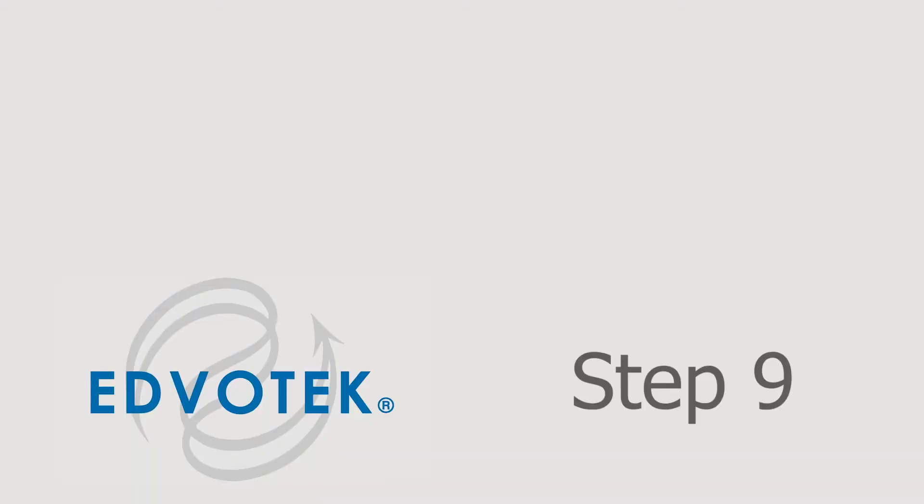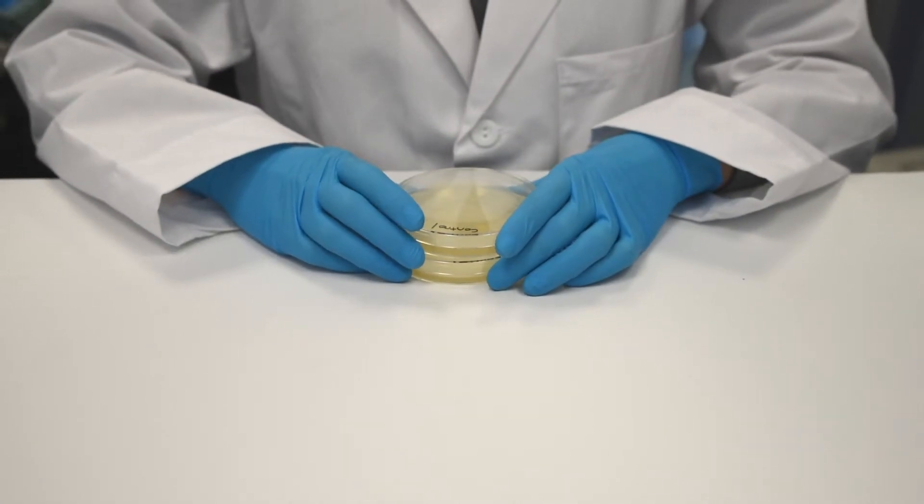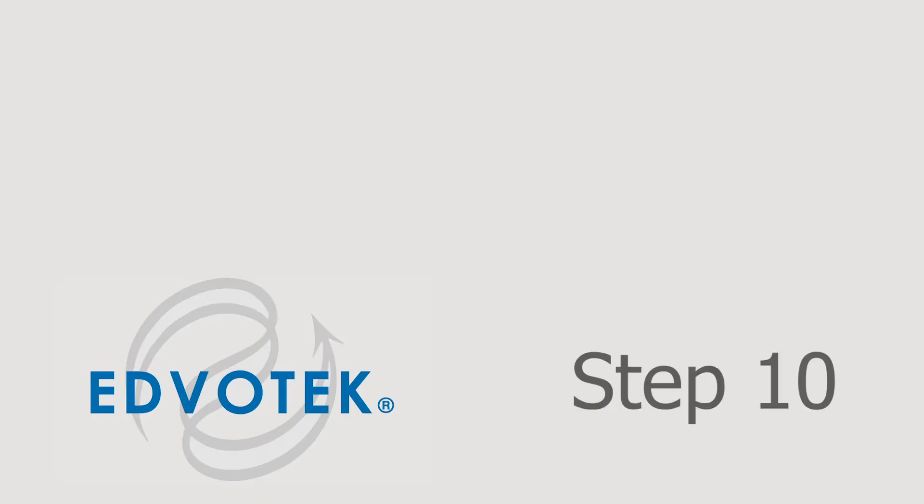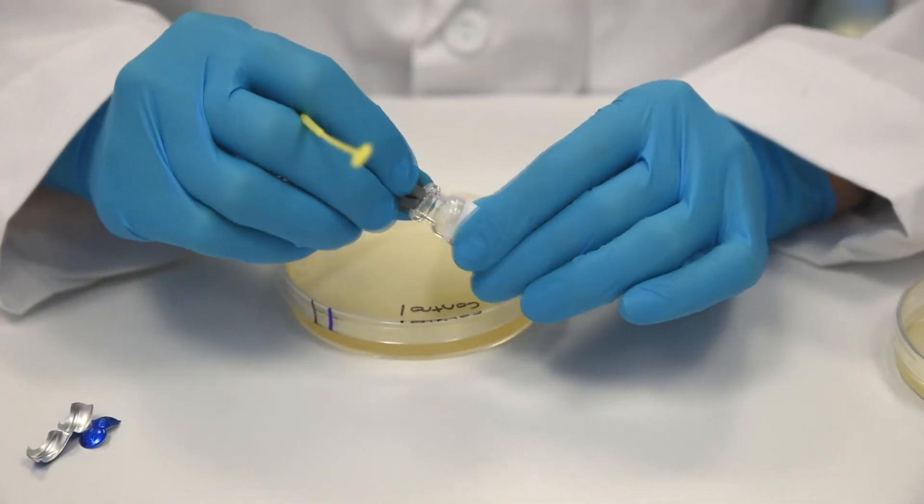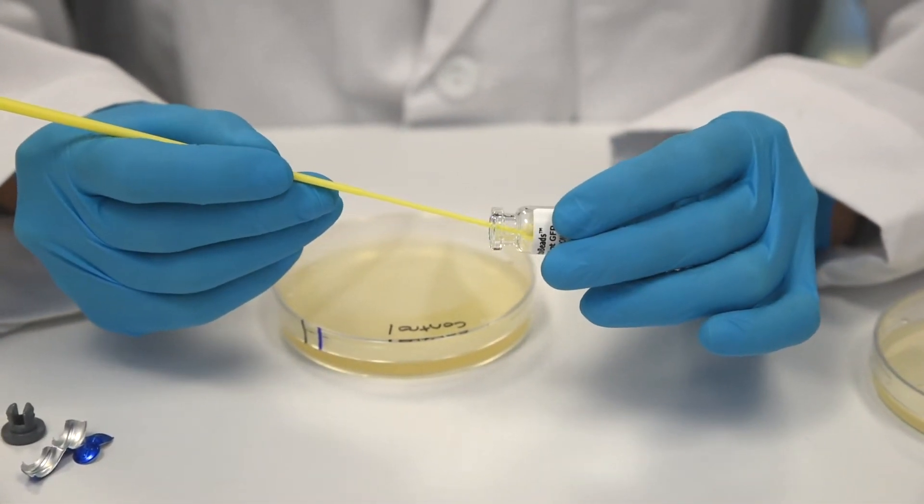Step 9: Retrieve the two large LB-Amp IPTG control plates. Step 10: Repeat steps 1 through 7 using the E. coli PT-GFP Bacto beads.